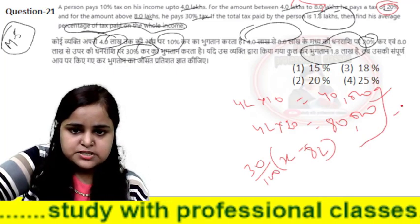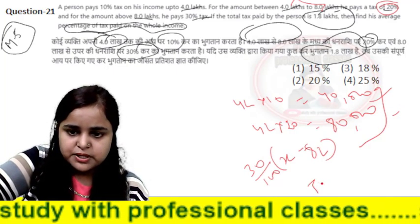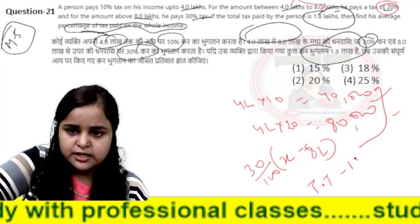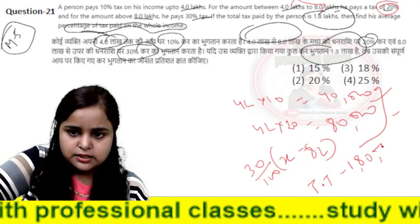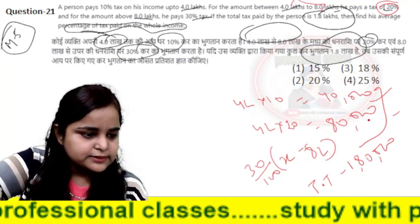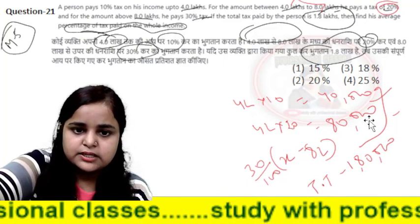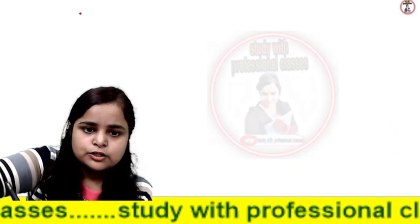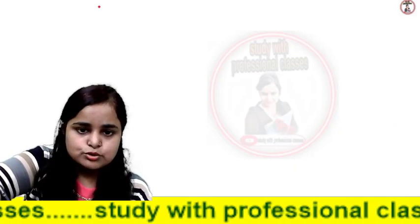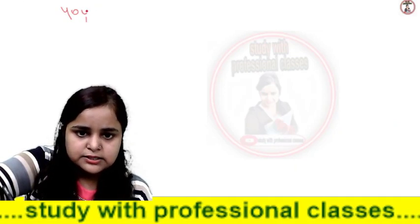So we have three tax statements. The total tax paid is 1,80,000. The question is clear. Let's take a sheet and solve it to find the total tax.